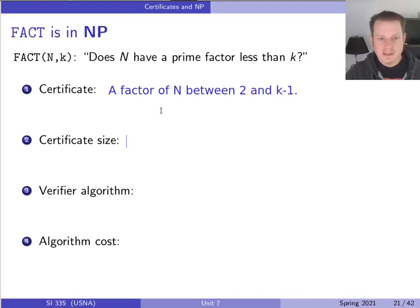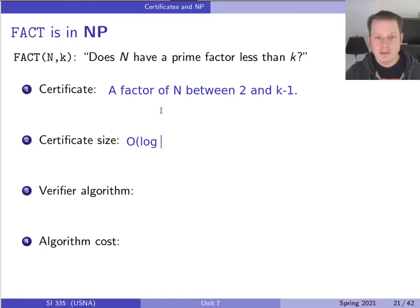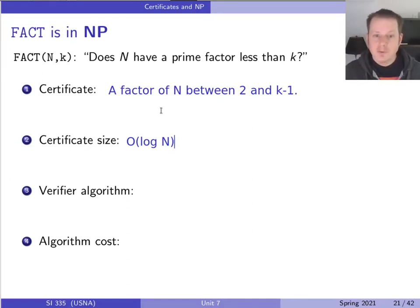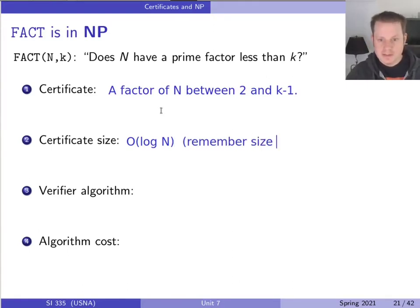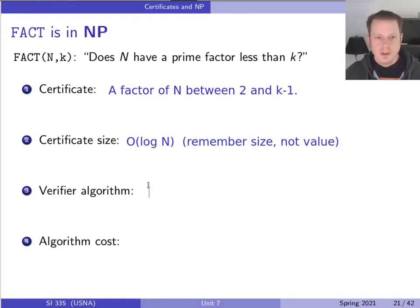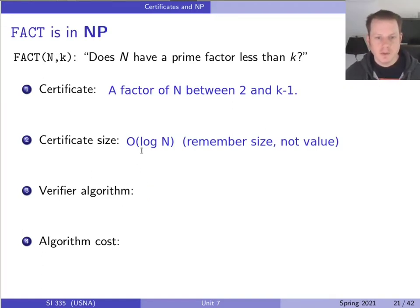The certificate size — this is always about the bit size of things. How big is this going to be? It's going to be log n, because any factor has to be less than n, so I can write it down with log n bits. The original input size is also log N — the number of bits in n itself. So it's important that the certificate is polynomial size relative to the original input.